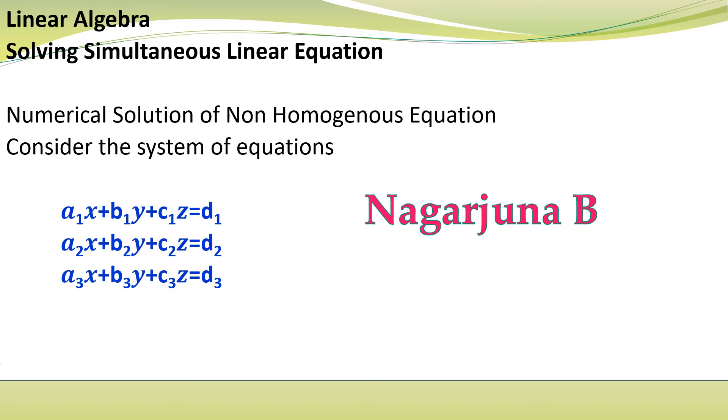a2x plus b2y plus c2z is equal to d2. a3x plus b3y plus c3z is equal to d3. So it is a system of equations consisting of three unknowns.